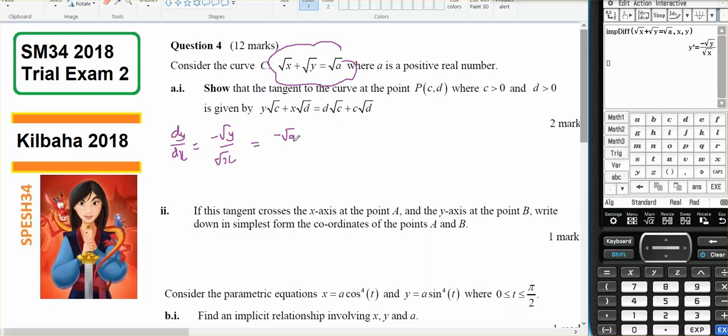So I've got y minus d equals negative root d on root c times (x minus d).